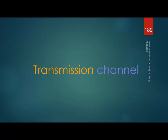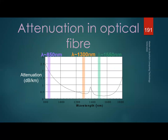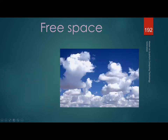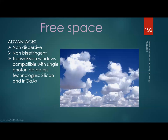The transmission channel is the same as in classical communications. Optical fiber has three transmission windows, and at 1550 nm we have the lowest attenuation — making it the most used wavelength for fiber-based QKD. We can also transmit quantum states through free space — the atmosphere. Free space is non-dispersive and not birefringent, so it won't deform the ellipticity of polarization states. Transmission windows at 850 nm (compatible with silicon detectors) and 1550 nm (compatible with InGaAs detectors) are particularly useful.